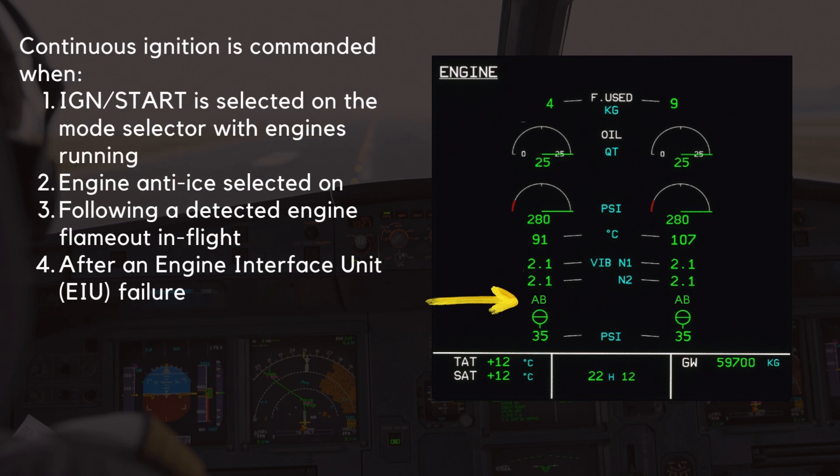Continuous ignition is commanded when: ignition start is selected on the mode selector with engines running; when engine anti-ice is selected on; following a detected engine flameout in-flight; or after an Engine Interface Unit, EIU, failure.